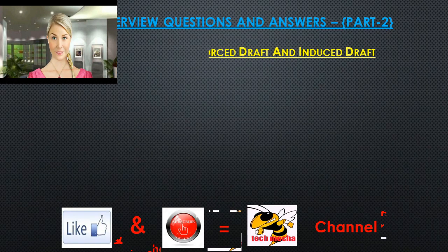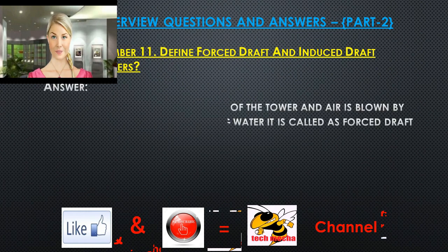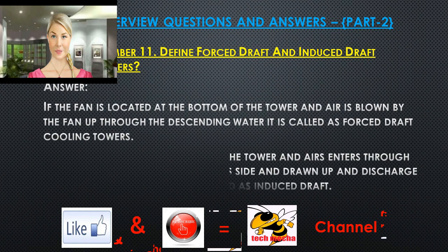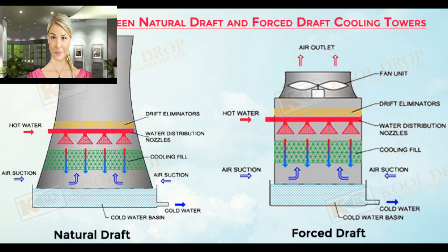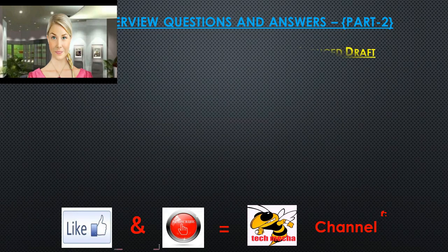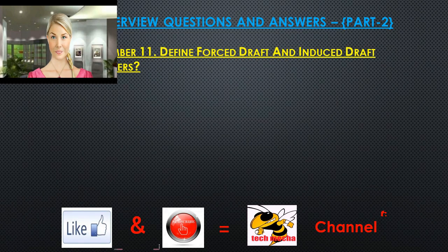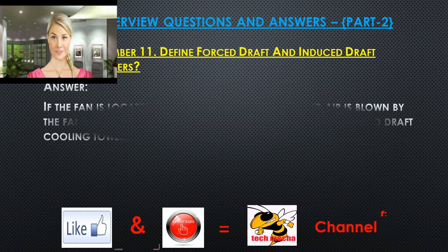Question 11: Define forced draft and induced draft cooling towers. If the fan is located at the bottom of the tower and air is blown by the fan up through the descending water, it is called a forced draft cooling tower. If the fan is located at the top of the tower, air enters through the louvers located on the tower's sides and is drawn upward.